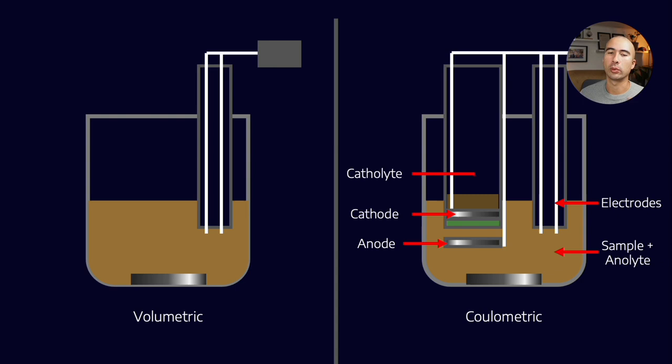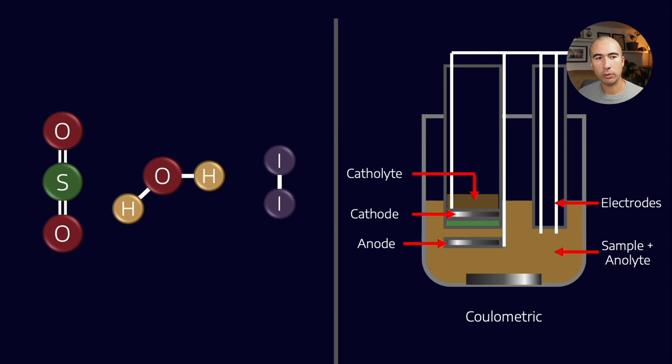Now the reason why this is a little bit different is because, remember we talked about this reaction: sulfur dioxide, water, and iodine. Well, in the sample plus analyte solution we don't actually have iodine. What we have is potassium iodide. And in this solution the iodine exists as ions.